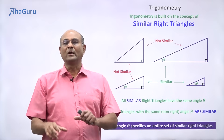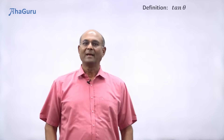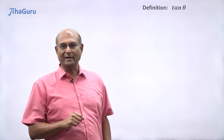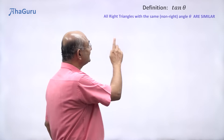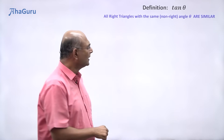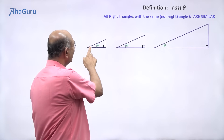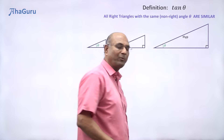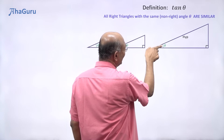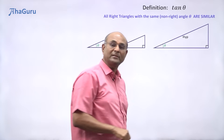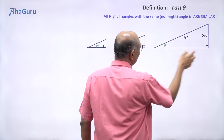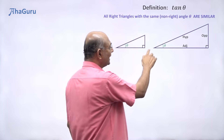Let us now define our very first trigonometric ratio, which is called tan theta. We know that all right triangles with the same angle theta are similar. So I am going to draw three different right triangles here with the same angle theta — so they are all similar. Now the longest side is called the hypotenuse. If you look at angle theta, this side is exactly opposite to theta, so we call this the opposite side. And this side is adjacent to theta, so we call it the adjacent side.